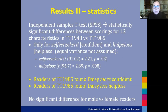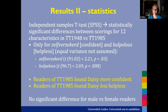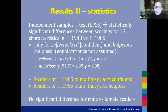Now it gets very statistical. We ran an independent samples t-test in SPSS to see if there were statistically significant differences between the scorings for those 12 characteristics between the two versions. We found that actually there were only two characteristics that showed a significant difference in scoring.